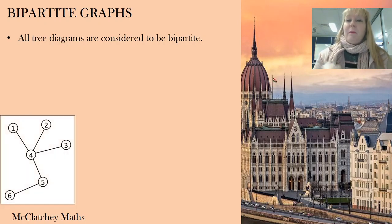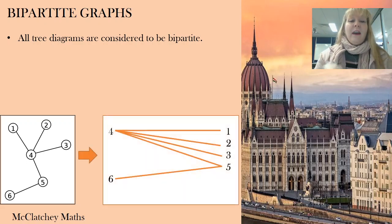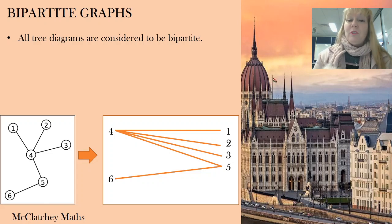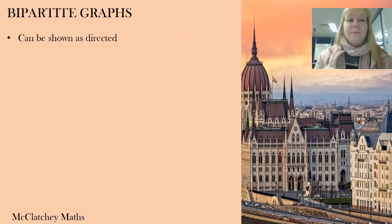All tree diagrams are considered to be bipartite. Here's an example of a tree — you may remember this from one of our early videos when we looked at minimum spanning trees. Over here we can turn that into a bipartite graph. Notice that 4 branches out to 1, 2, 3, and 5 branches out to 5, but nothing goes between 4 and 6, and nothing goes between 1, 2, 3, and 5 — so those two sets are completely distinct.